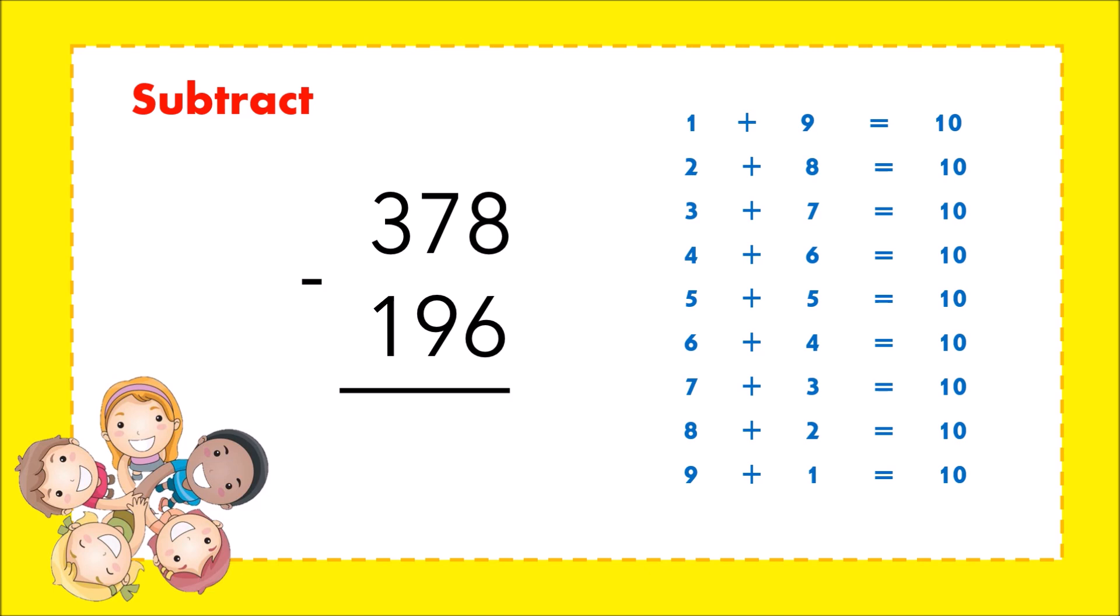Okay, let's solve. 8 minus 6 is 2. 7 minus 9 is not possible, so we will use partner numbers.